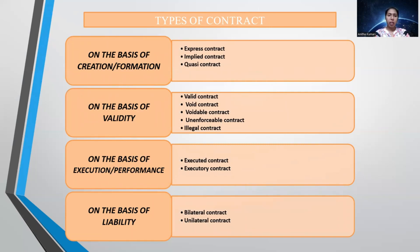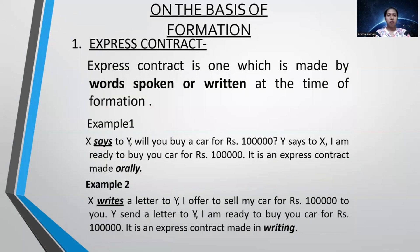Types of contract: contracts can be classified on the basis of four categories. On the basis of creation and formation, they are called express contract, implied contract, and quasi-contract. On the basis of validity: valid, void, voidable, unenforceable, and illegal contract. On the basis of execution and performance: executed and executory contract. On the basis of liability: bilateral and unilateral contract.